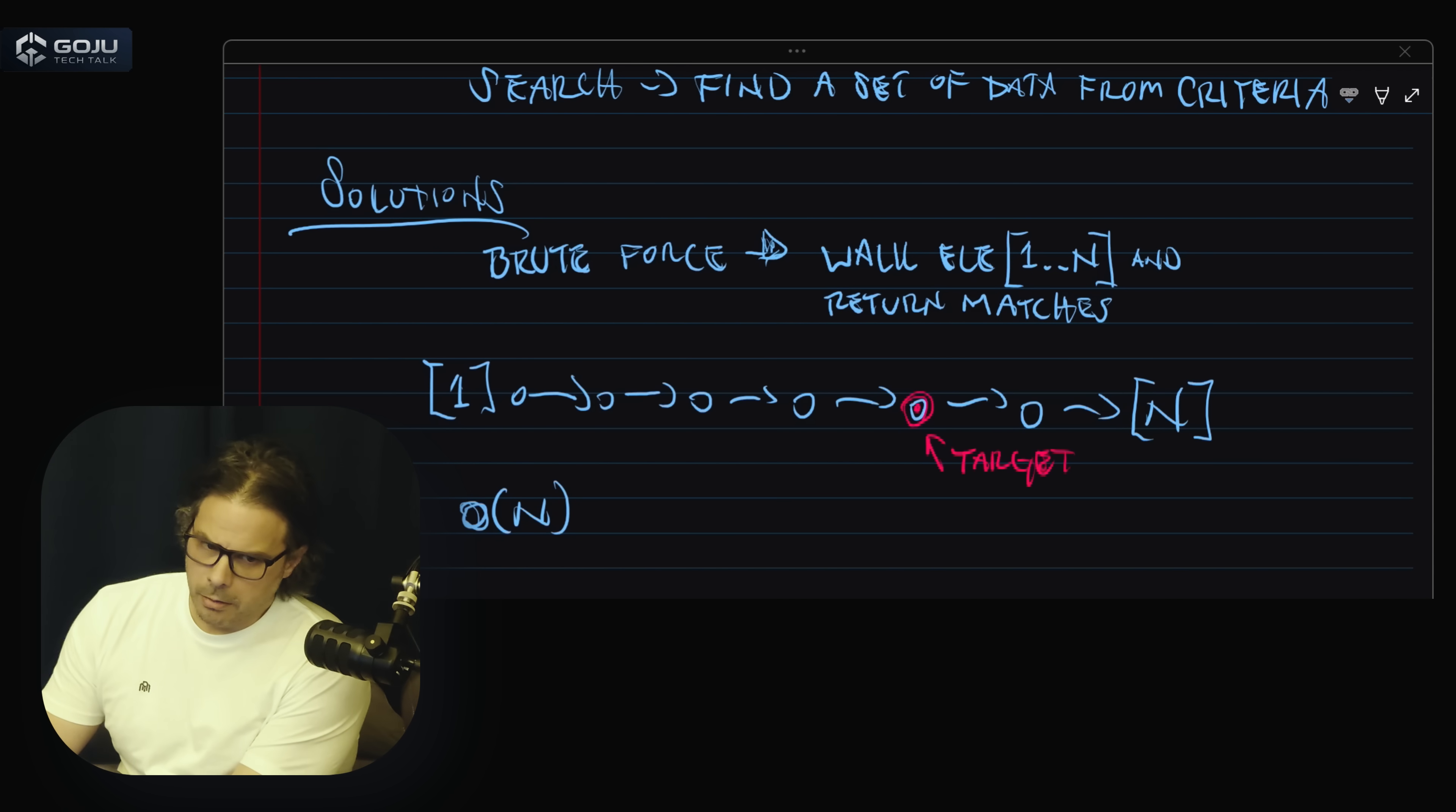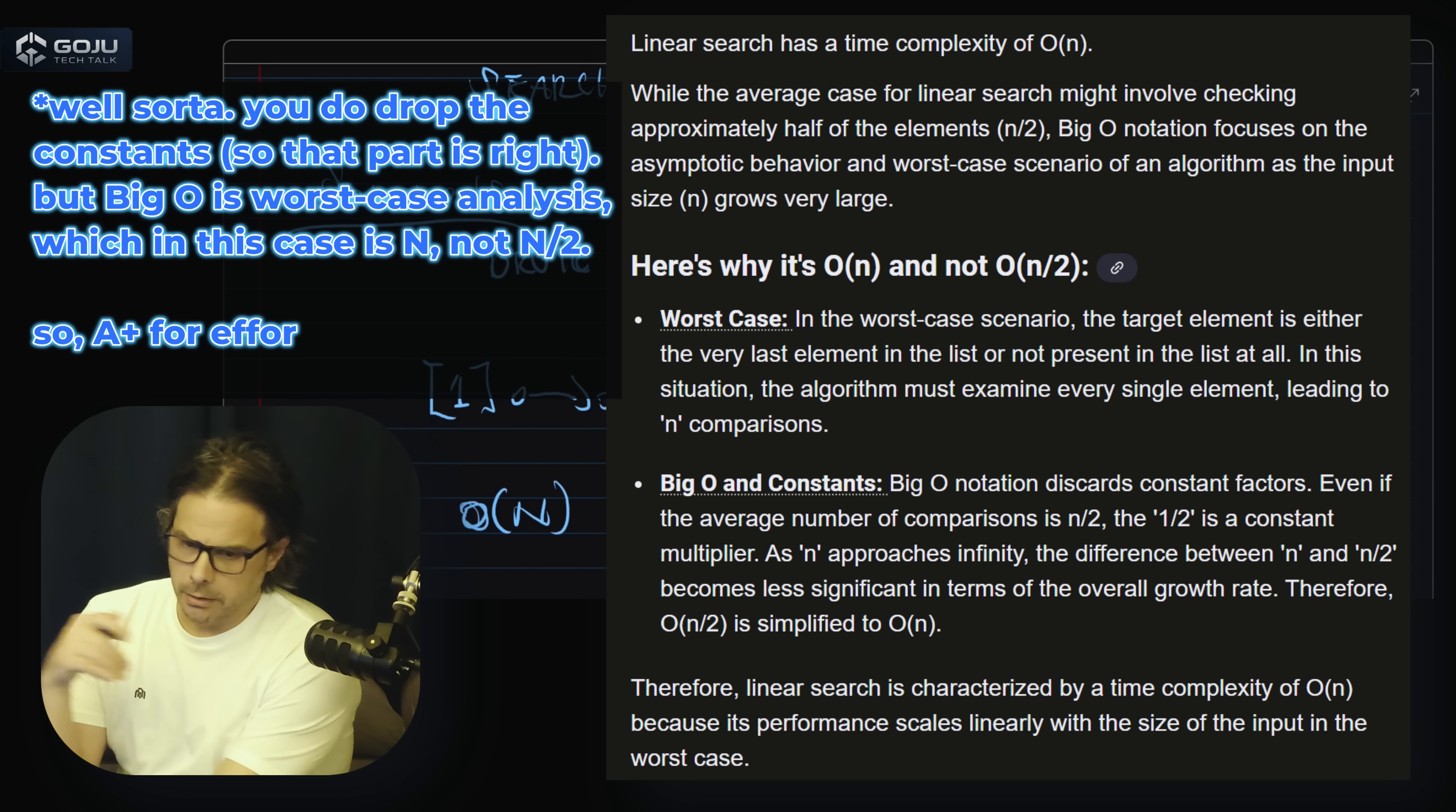Yeah, I think it's actually O of n divided by 2, but you essentially elide away those constants, and so it's just like O of n, I think.